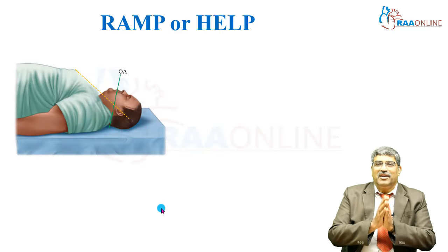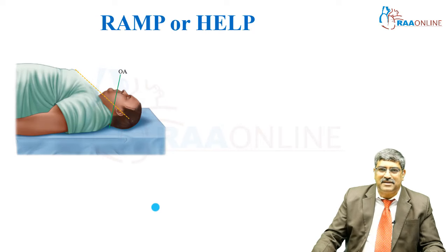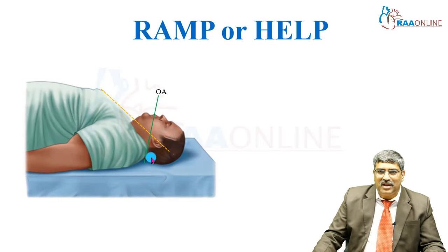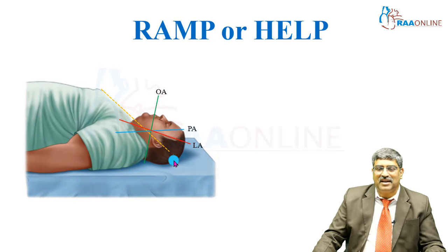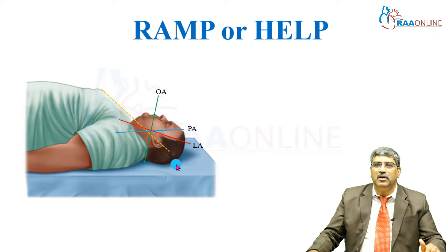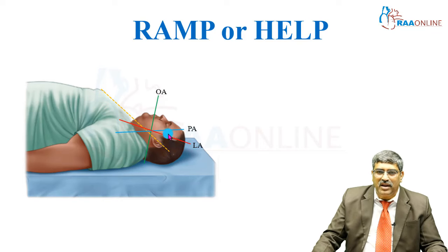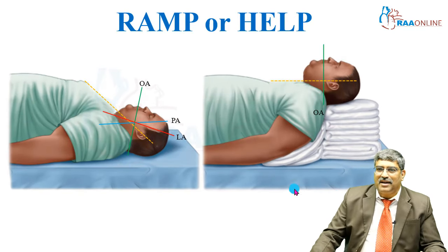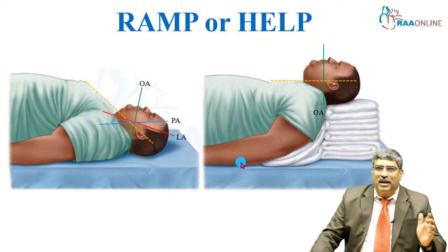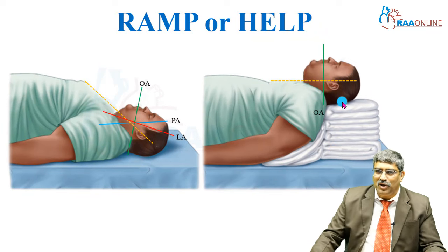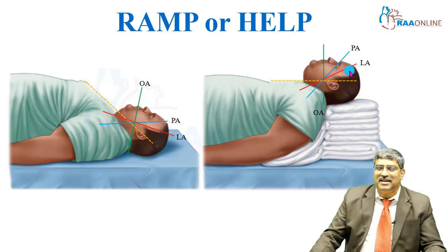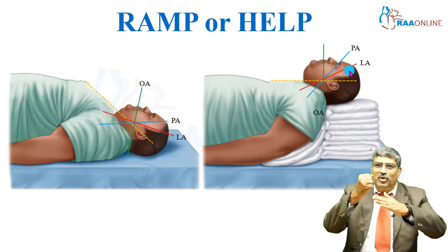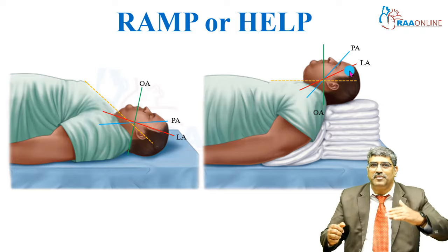For general anesthesia, when the patient lies supine without head support, the oral, laryngeal, and pharyngeal axes do not align. With the ramp or head-elevation laryngoscopic position, you place a cotton pad under the head so the pharyngeal and laryngeal axes nearly approximate, making laryngoscopic view of the glottis much easier.